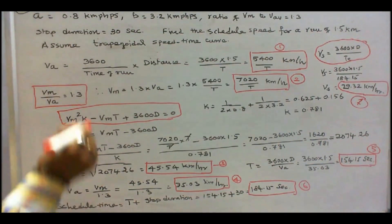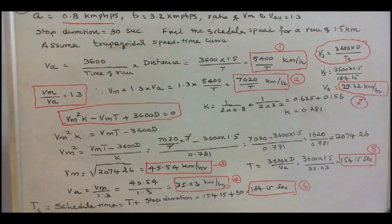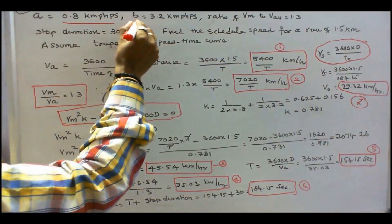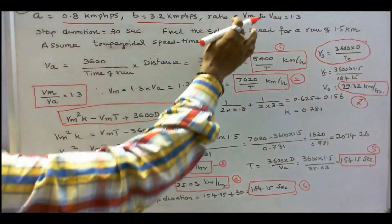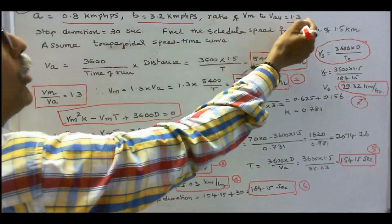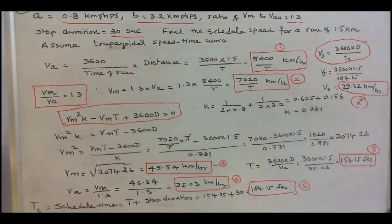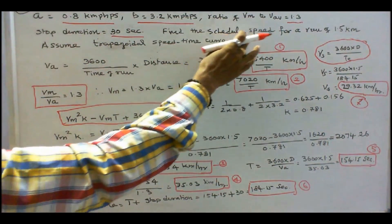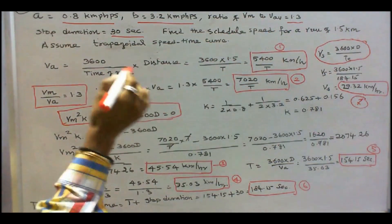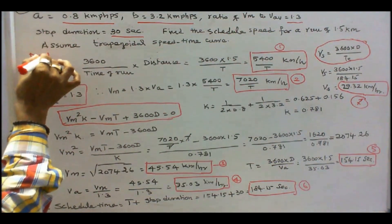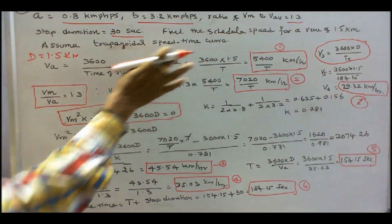In this problem, acceleration is given as 0.8 km per hour per second, retardation is 3.2 km per hour per second, ratio of maximum speed to average speed is 1.3, stop duration is 30 seconds, and the run distance d is 1.5 km. We assume a trapezoidal speed-time curve.